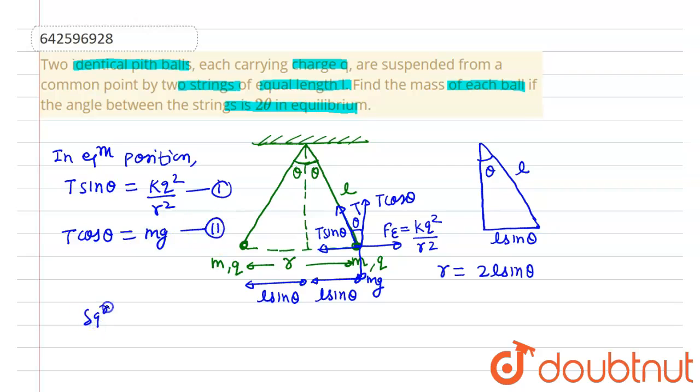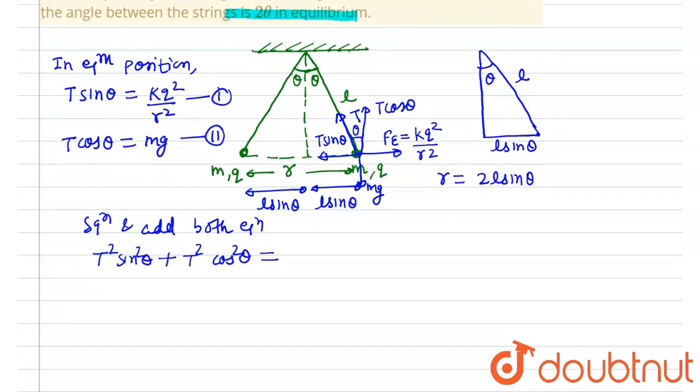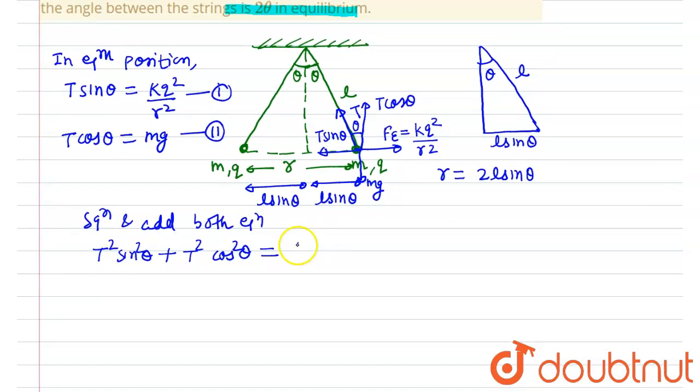Squaring and adding both equations, we will get T² sin² θ plus T² cos² θ equals kq² upon r² squared plus m²g². From here, T² will be equals to k²q⁴ upon r⁴ plus m²g². But from here we have found T² but we have to remove the θ.